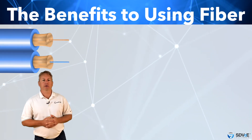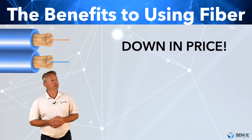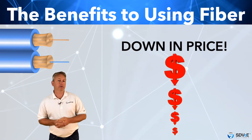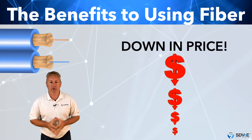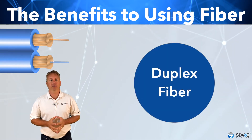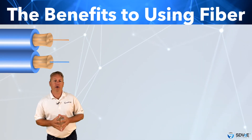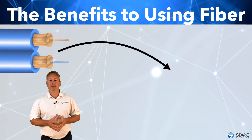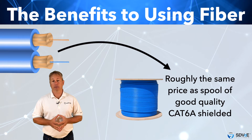Fibre and the components to connect to the ends of it have also come way down in price. To give a comparison, the type of fibre generally used to connect two IP switches together is called a duplex fibre — we'll discuss that in more detail in the next module. A thousand feet or 305 metres of this particular fibre is now roughly the same price as a spool of good quality Cat 6A shielded.